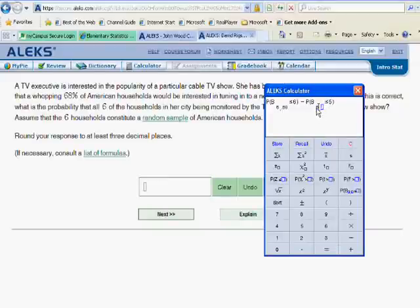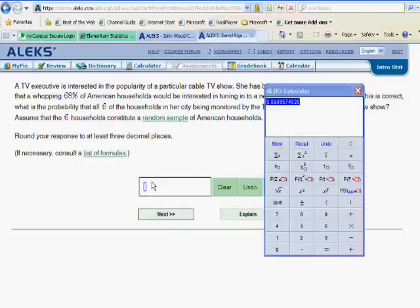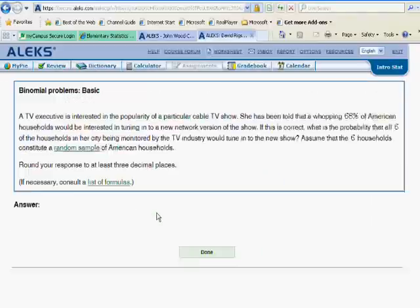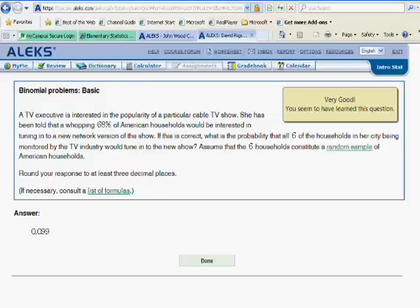So n is 6, p is 0.68. Let's calculate. And we get 0.098 with the next digits in 8, so 0.099. Now let's check that and be sure ALEKS is happy. And we are good to go. This is binomial problems basic in ALEKS statistics.